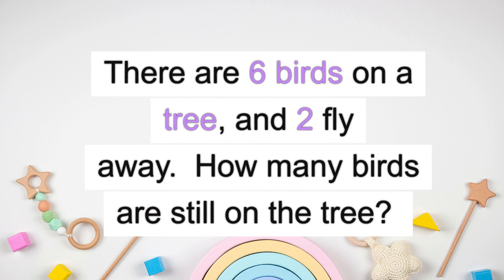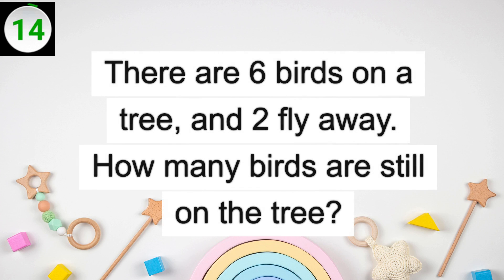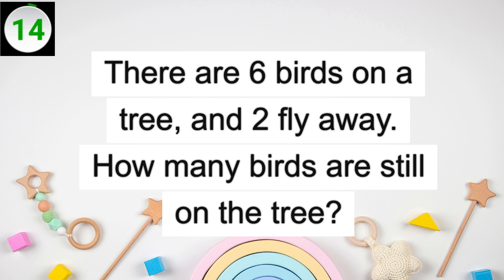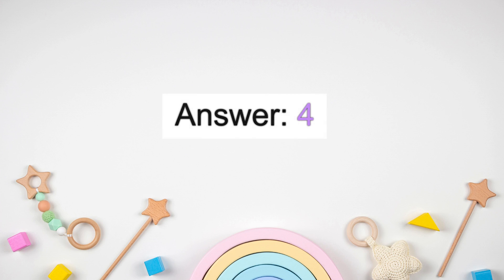There are 6 birds on a tree and 2 fly away. How many birds are still on the tree? Answer: 4.